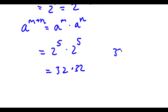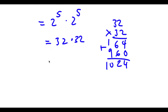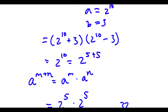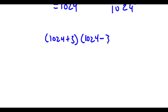I can go ahead and do this right here. 32 times 32: 2 times 2 is 4, 2 times 3 is 6, 3 times 2 is 6, and 3 times 3 is 9. So I have 64 plus 960, 4 plus 0 is 4, 6 plus 6 is 12 — carry the 1 — and 9 plus 1 is 10. So I have 1024. Because 2 to the power of 10 is 1024, I have 1024 plus 3 times 1024 minus 3.